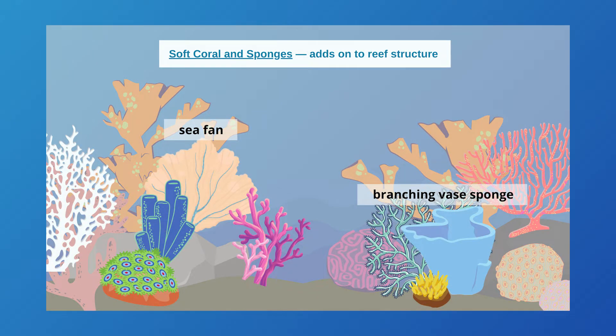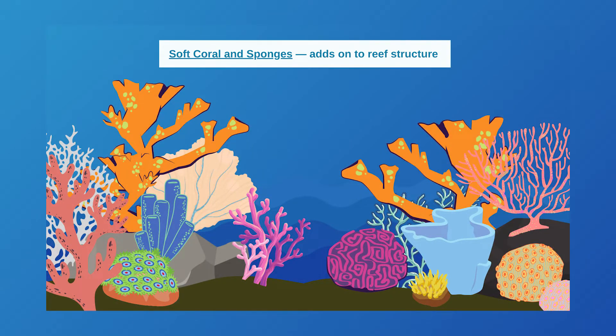Once stony corals are established, soft coral and sponges will come in and attach themselves to the new hard surfaces the stony corals have created. The soft corals are related to stony corals but do not create a calcium carbonate skeleton. Sponges are animals with bodies full of pores and channels that allow water to filter through them to feed. These flexible animals add complexity and color to a reef.